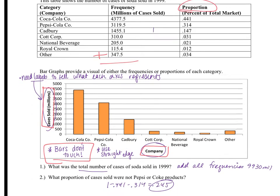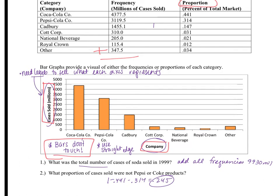When answering questions about our data, we refer to both the chart and graph. The first question asks for the total number of cases sold. To figure this out, add up all cases in the left column to get 9,930. Because the data is in millions of cases, we have 9,930 million cases of soda. Make sure to include million with your answer.